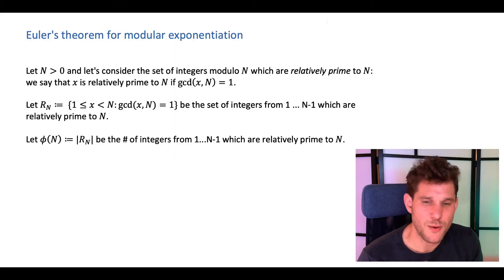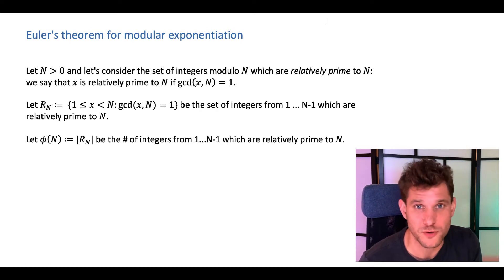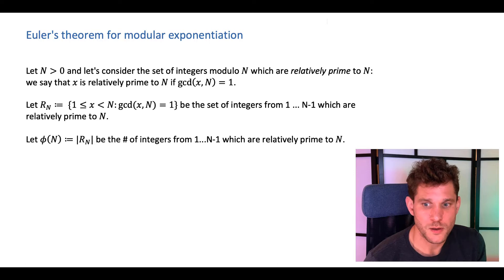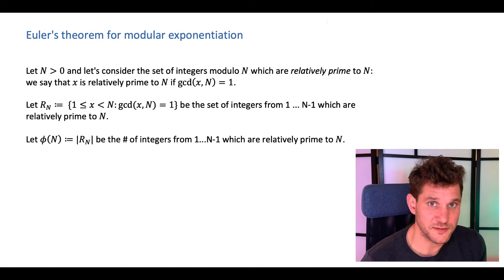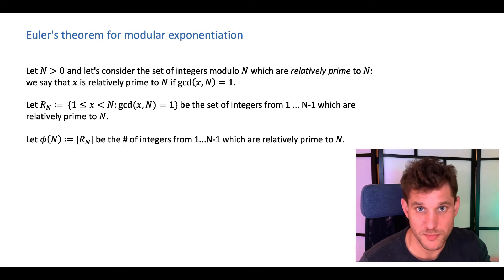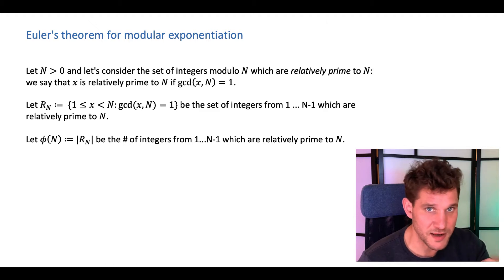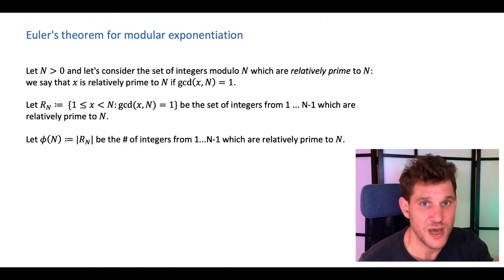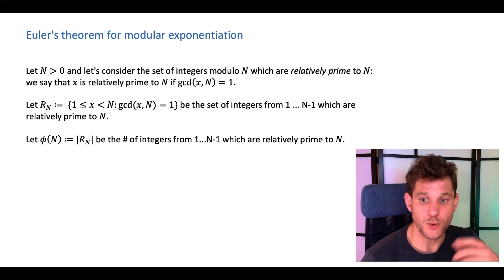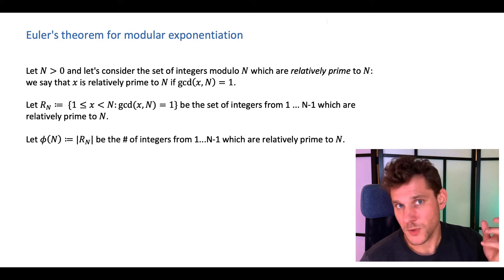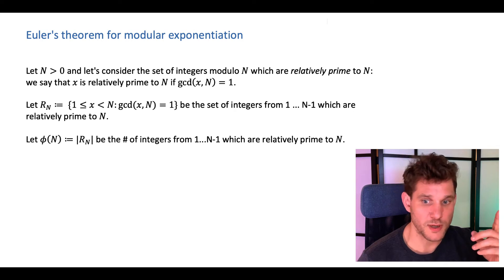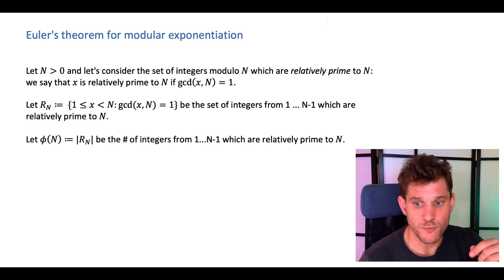So now we're going to prove something which is a little bit technical, but it's incredibly useful and very relevant for RSA cryptography. What we want to do is take a number n and consider all of the numbers x which are between 1 and n that are relatively prime to n — meaning the greatest common divisor of x and n is 1, so x and n don't have any factors in common. We'll call this set R sub n: the set of all integers from 1 up to n minus 1 for which GCD(x, n) equals 1.